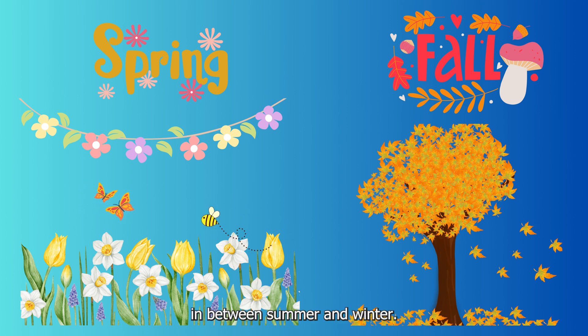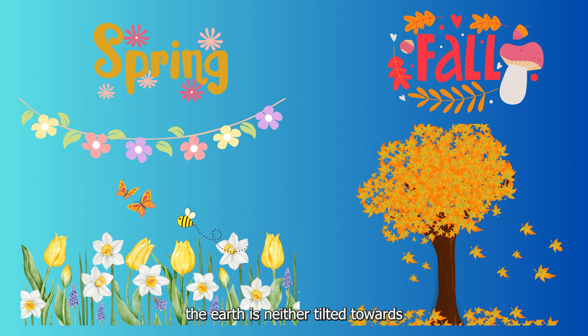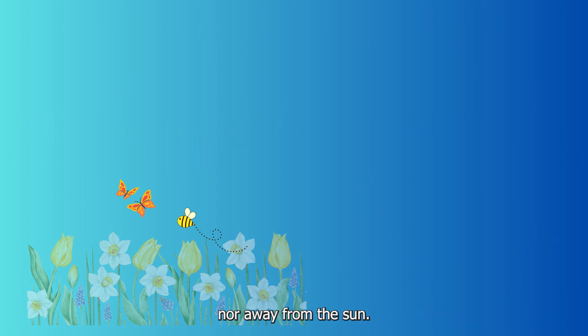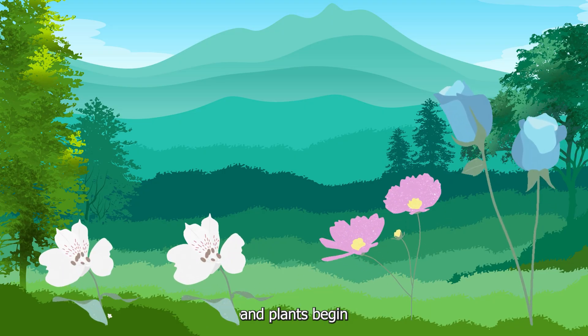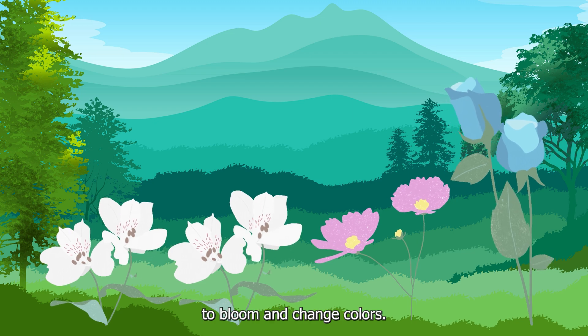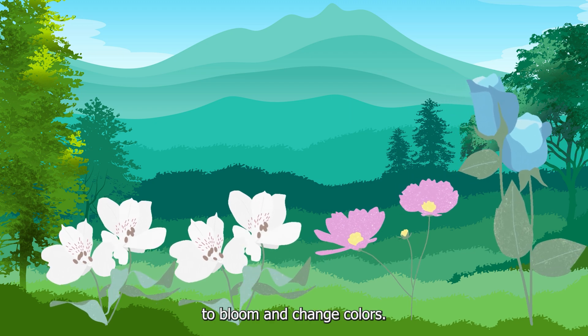Spring and fall happen in between summer and winter. During these seasons, the earth is neither tilted towards nor away from the sun. This creates milder weather, and plants begin to bloom and change colors.